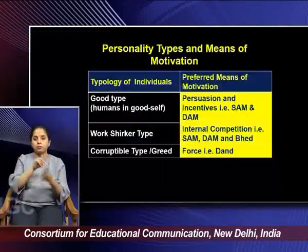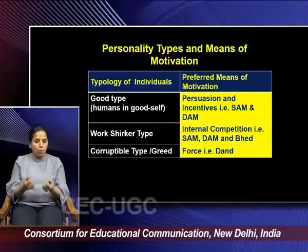The third one is the corruptible type, that is greed. If the employee is classified under this third category, you have to use force — Dand. So force is to be used if a human being is classified under the third segment, the corruptible or greed type. Kautilya has very eloquently given this classification of typology of individuals, and based on that we can craft the preferred means of motivation: Sam and Dam, then Sam, Dam and Bhed, and eventually Dand.